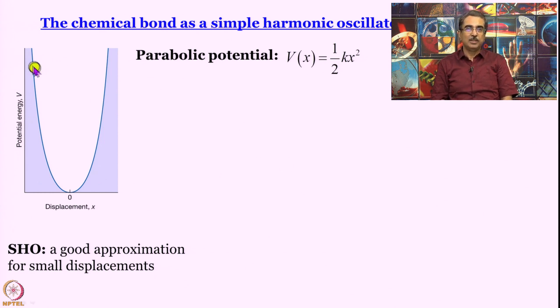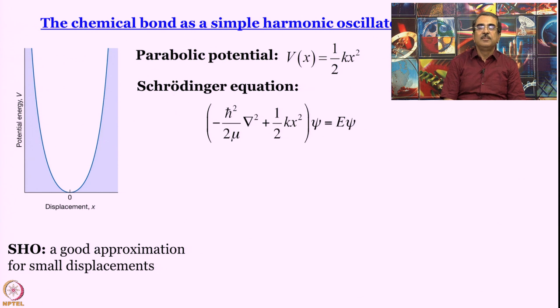So this is our parabolic potential. Now we will write Schrödinger equation as usual. It is minus h-bar squared by 2 mu del square plus half k x square. Remember, once again, we are using mu because it is a two body problem, HCl. But we do not like two body problems, more difficult to handle. So we reduce it to a one body problem. And when we do that, the mass that we need to consider is the reduced mass: 1 by mu equal to 1 by m1 plus 1 by m2. So minus h-bar squared by 2 mu del square gives you the kinetic energy term, half k x square gives the potential energy. So the Hamiltonian is there, we have written the equation, one can solve it.